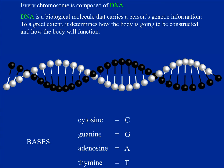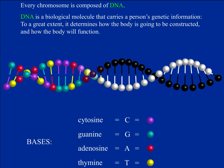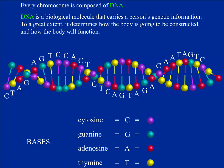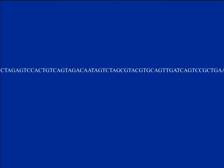The bases are represented in the graphic by spherical pellets. We could color-code the bases to see the sequence, or just put the letters next to them. If we separate the two chains, take one and straighten it out, each base is represented by one letter — C, G, A, or T — representing the sequence of bases in the DNA.